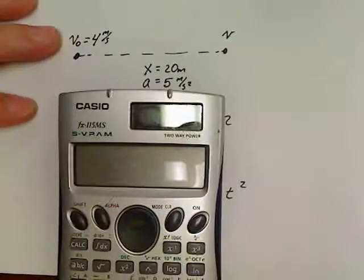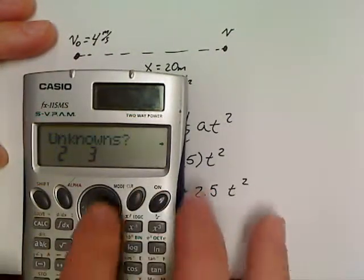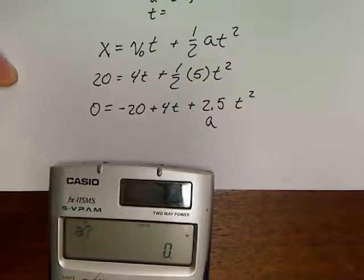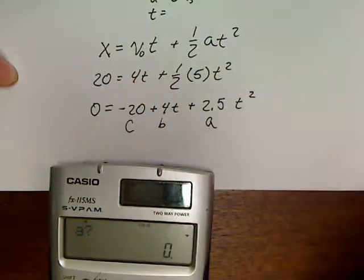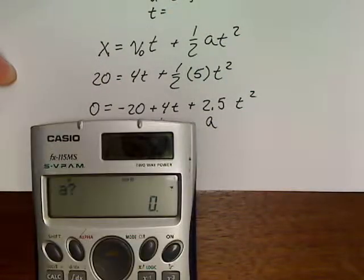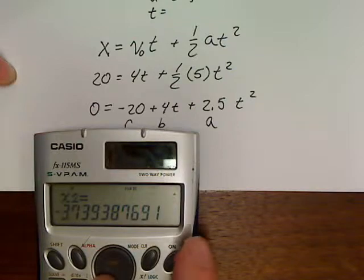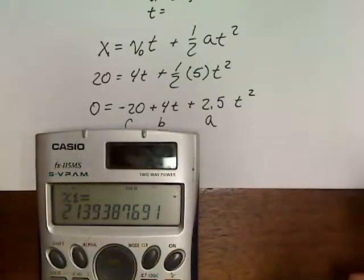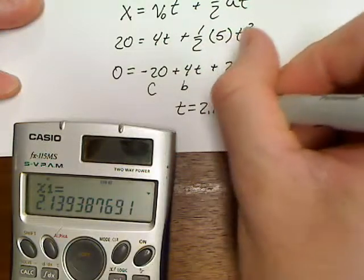Now, I'm going to go to Casio with a built-in quadratic function. Mode, mode, mode. A would be the square variable, B would be the 4, and then C is the negative 20 out here. So we'll go 2.5, enter, 4, enter, negative 20, enter. 2.13 and negative 3.7 are the answers. Well, time can't be a negative 3 value, so 2.14 is my answer. So time equals 2.14 seconds.